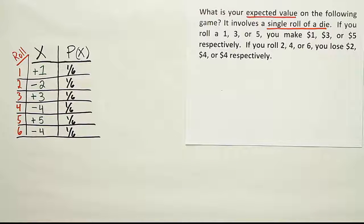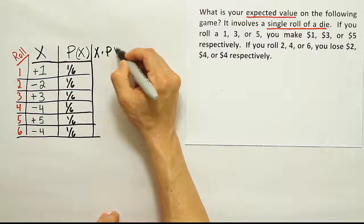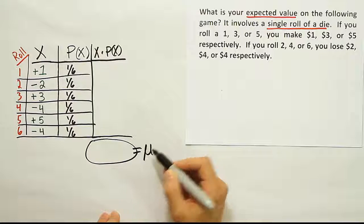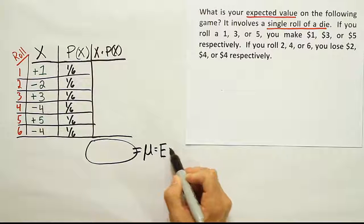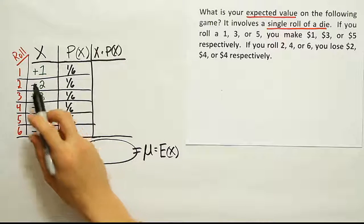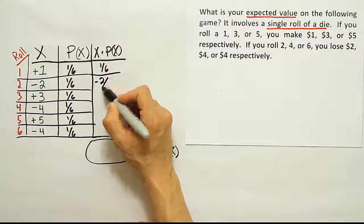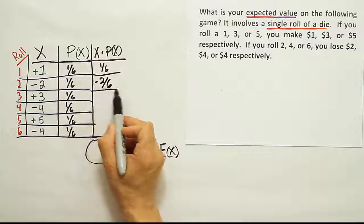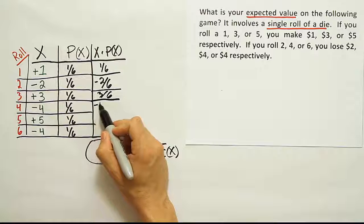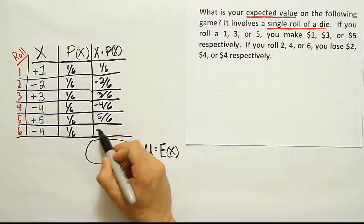From here, the rest is just performing the expected value calculation: x times p(x), multiplying those columns together. The sum at the bottom gives us the mean, or expected value — also written as E(x). Let's do it: 1 × 1/6 = 1/6; negative 2 × 1/6 = negative 2/6; 3 × 1/6 = 3/6; negative 4 × 1/6 = negative 4/6; 5 × 1/6 = 5/6; and negative 4 × 1/6 = negative 4/6. Don't reduce yet — keep the common denominator for easy addition.